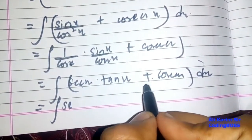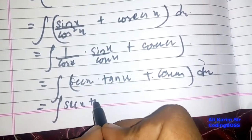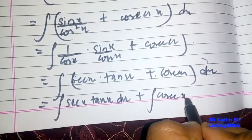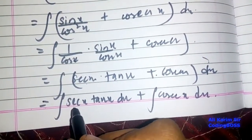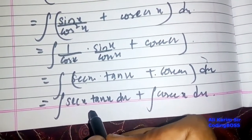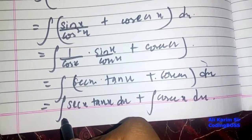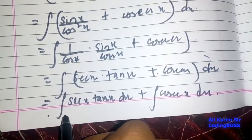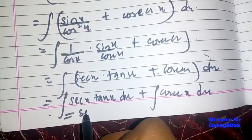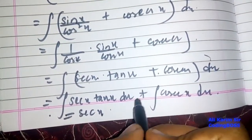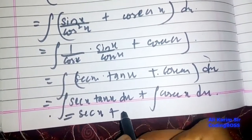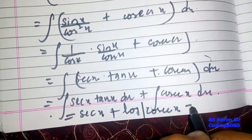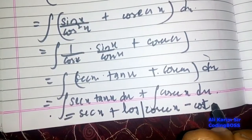Separating the terms because there is a plus sign: integration of sec x tan x dx plus integration of csc x dx. The integration of sec x tan x is sec x, and the integration of csc x is log of csc x minus cot x.